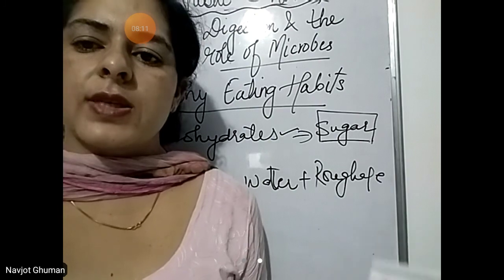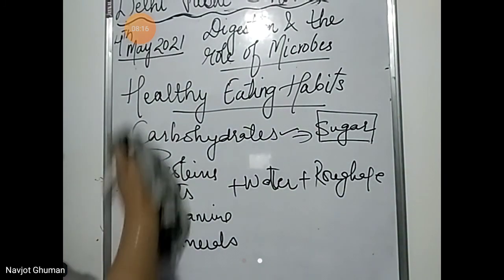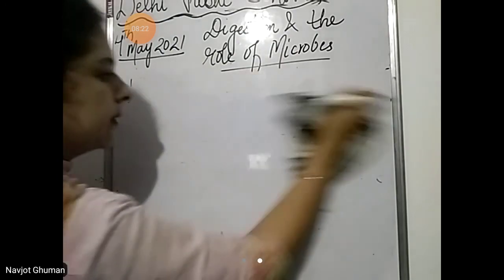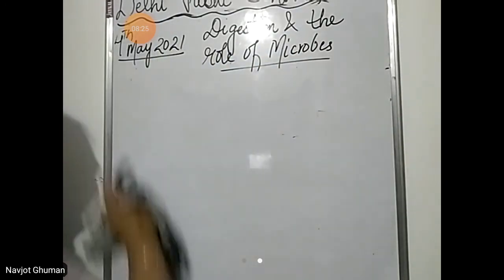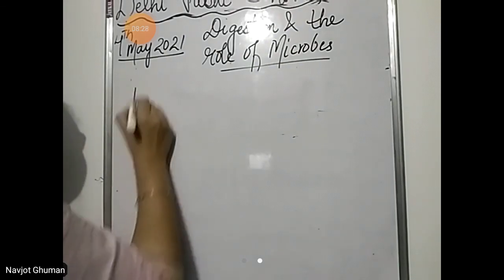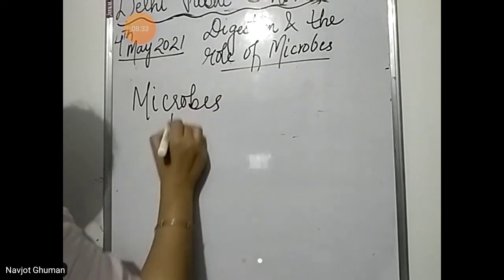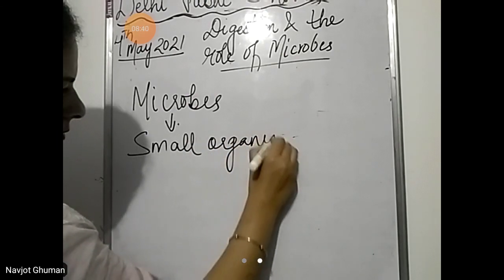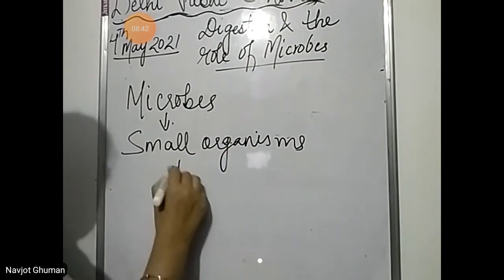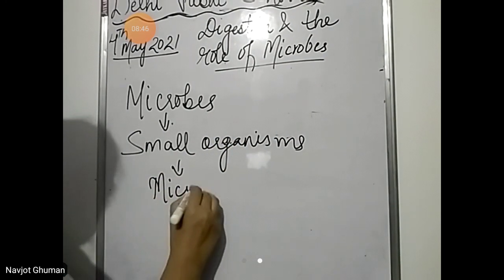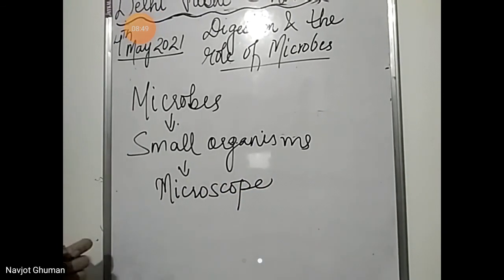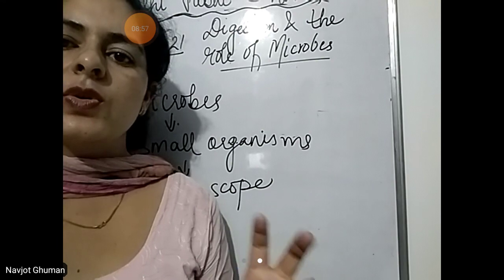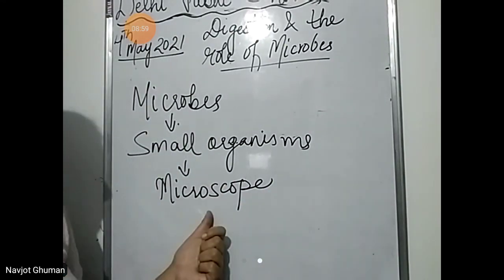Next topic is microbes — this is the last topic of this chapter. Microbes are small organisms that cannot be seen with the naked eyes and are only seen with the help of an instrument called a microscope. These are very small organisms — we cannot see them with the naked eye and can only see them with the microscope.